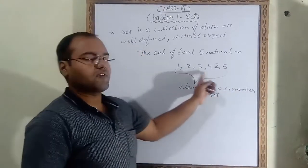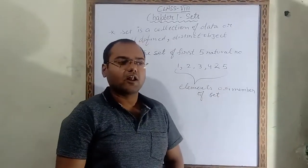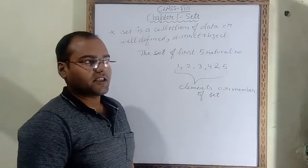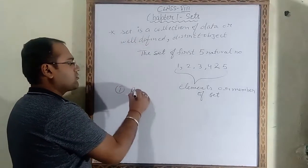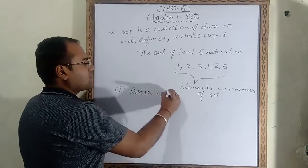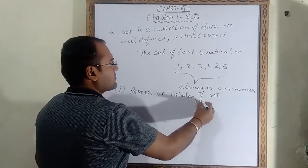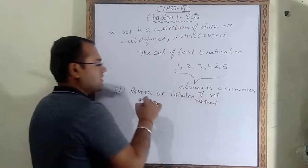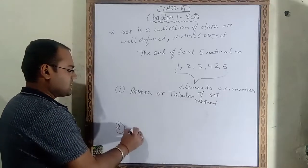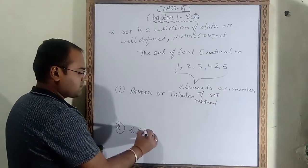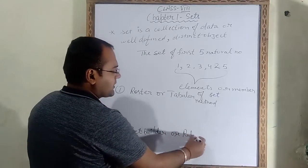These all five numbers are called elements or members of a set. Now to represent the set there are two methods. The first method is the roster method or tabular method, and the second method is the set builder or rule method.